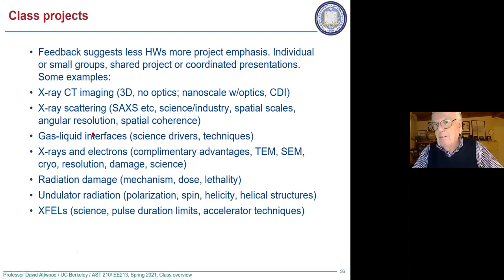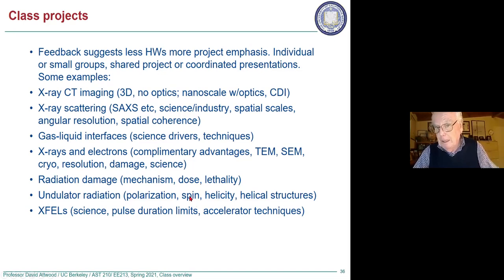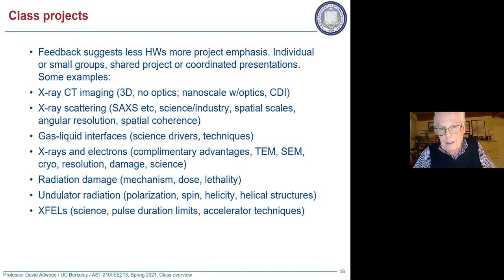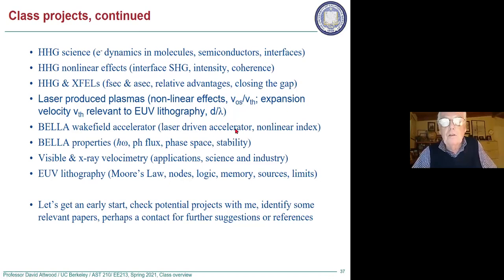I'm going in roughly the order we're coming to in the book. Undulator radiation — we will talk about undulator radiation in class a lot, but what we won't talk a lot about is the polarization of the undulator radiation. How does that relate to spin and magnetic materials, or to helicity like in DNA — helical structures? Someone could pick up on that. Xiao Xi Huang said he's interested in spin and spin systems.